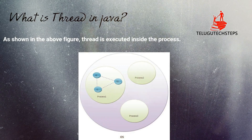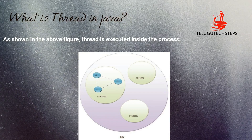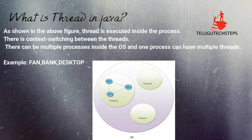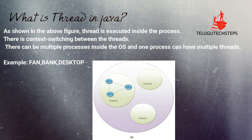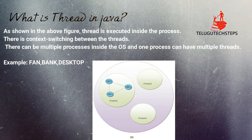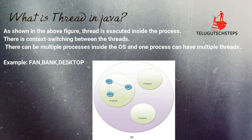Inside a process there can be multiple threads — thread 1, 2, 3 — and they can communicate with each other. Each thread has its own job. A thread has to be executed inside a process. There can be multiple processes inside the operating system, and one process can have multiple threads — for example, t1, t2, t3.